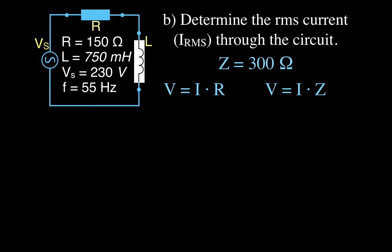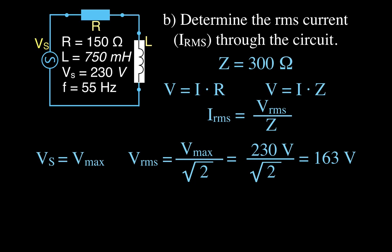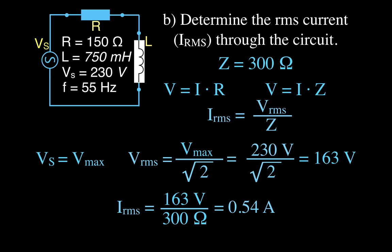We want the RMS current, so we need the RMS voltage. When the problem gives Vs as 230 volts, that's typically the maximum voltage. The RMS voltage is Vmax divided by the square root of two: 230 divided by root 2 gives 163 volts RMS. Then the RMS current is 163 divided by 300, which gives 0.54 amperes.